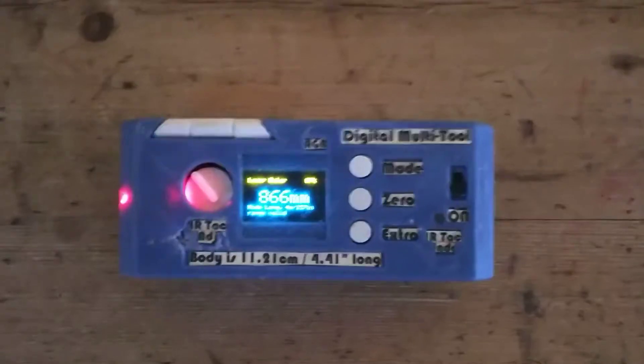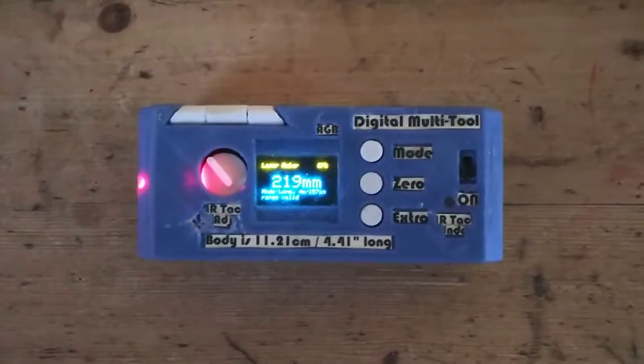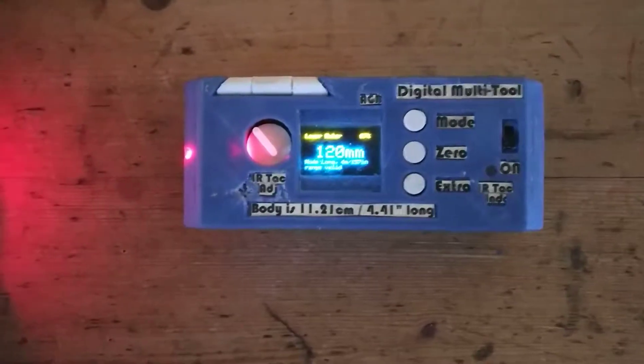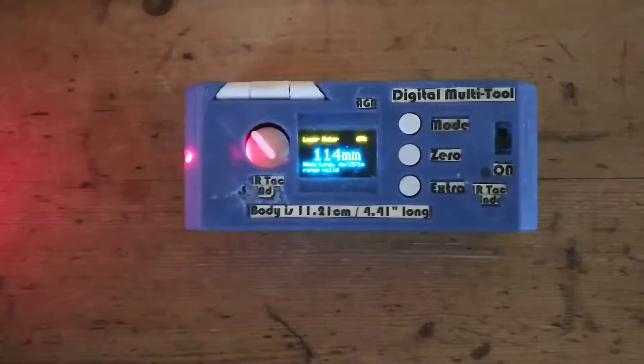Next we have a non-contact ruler, so as I move my hand different distances away you can see it gives you the distance measurement.